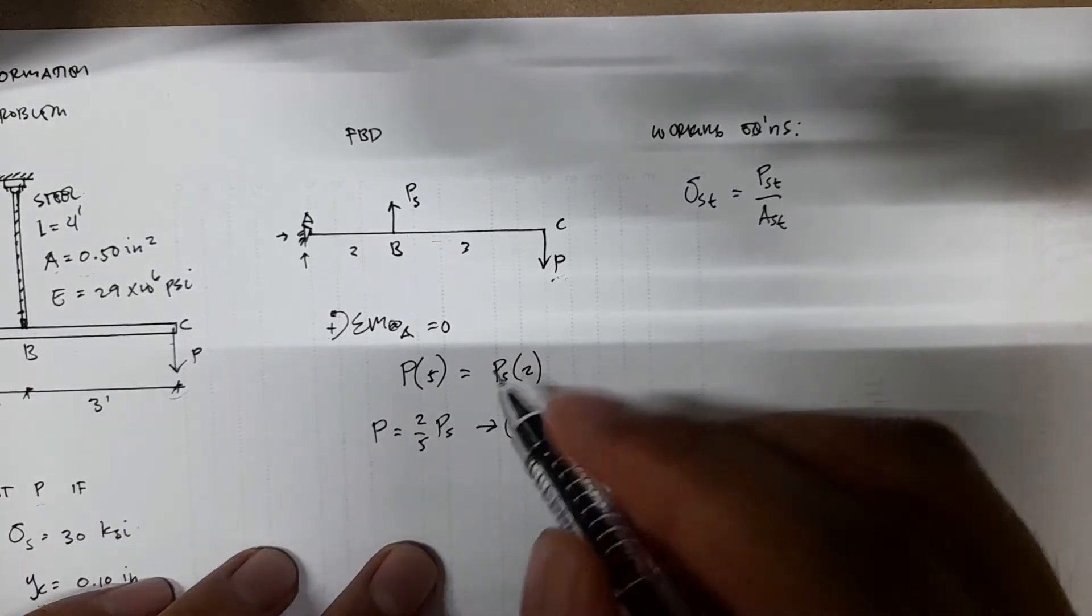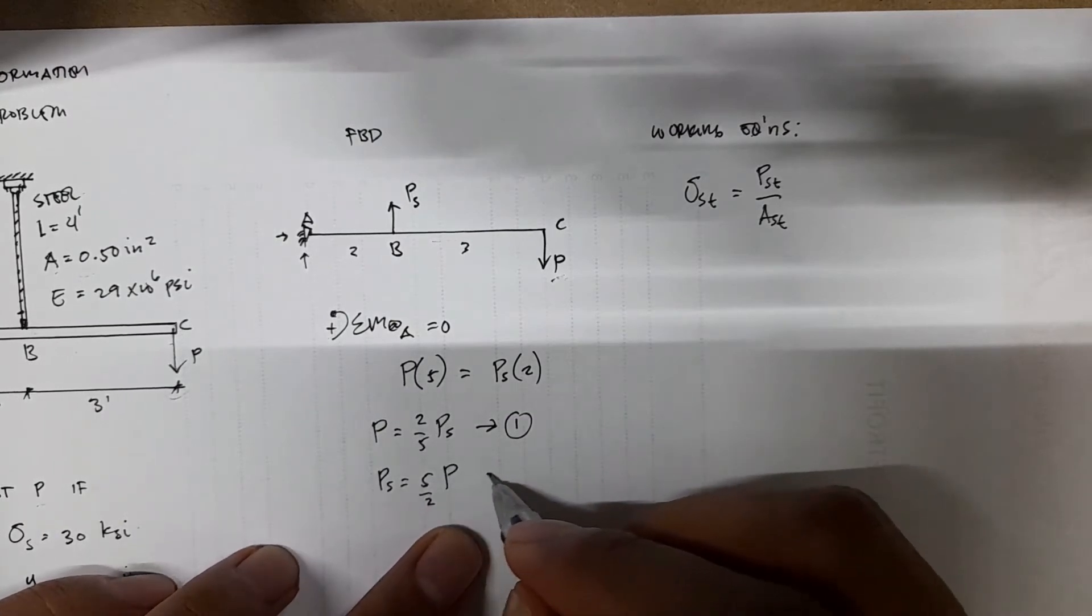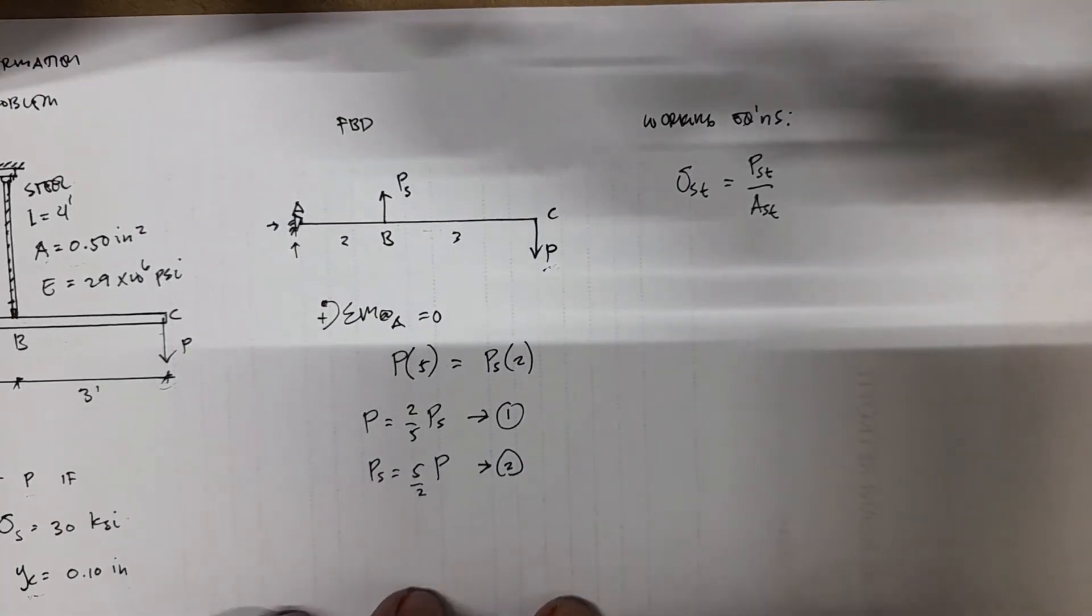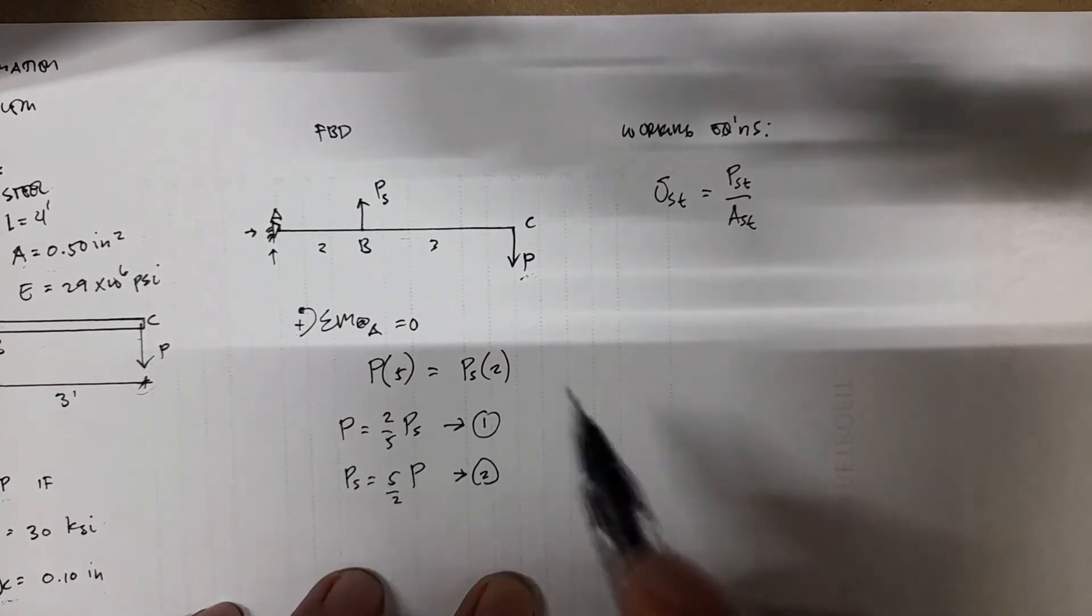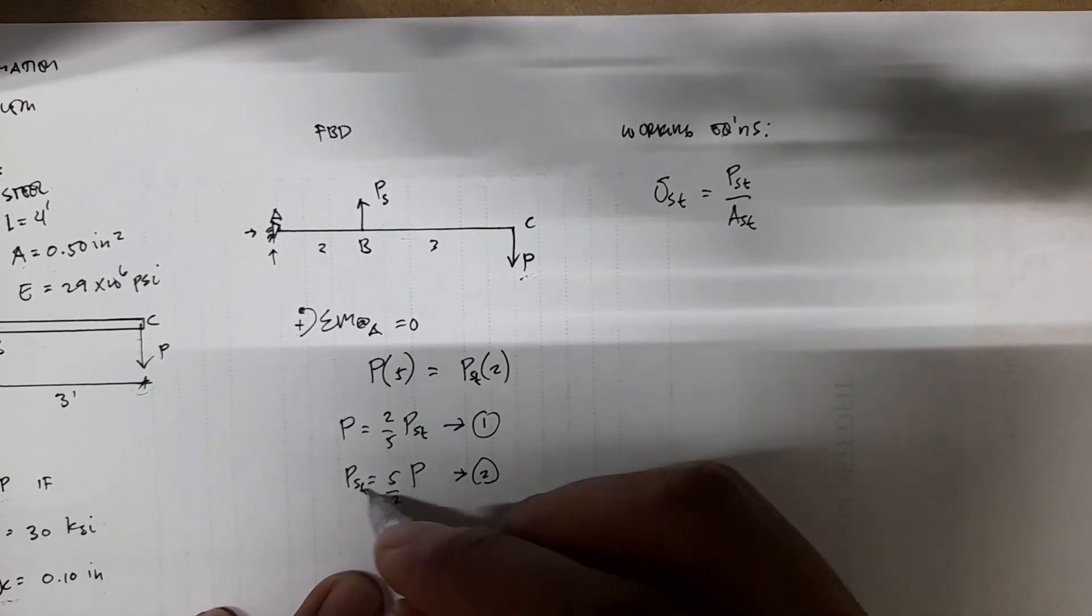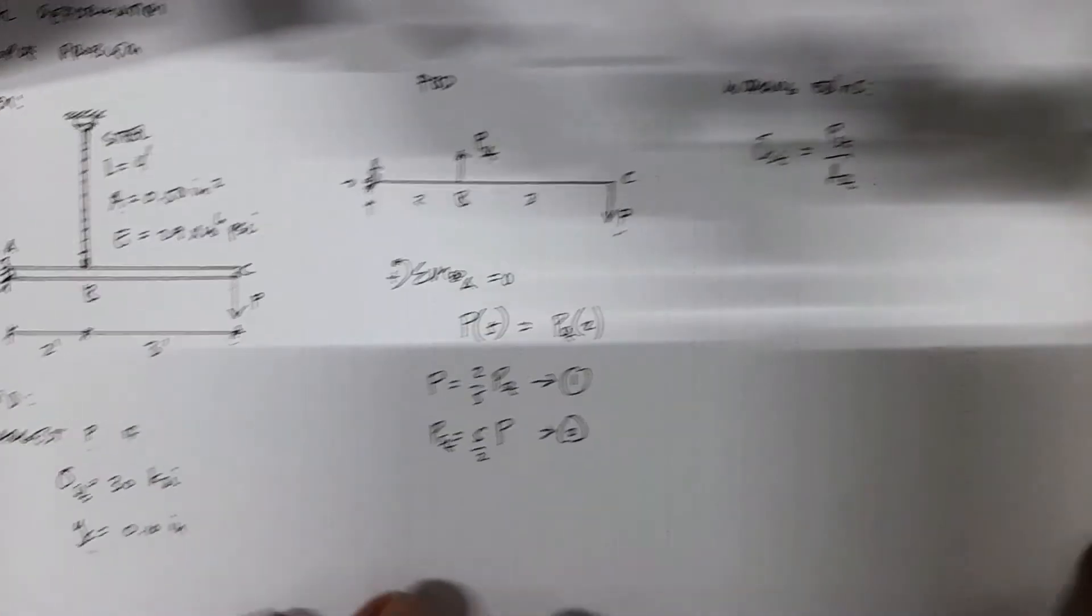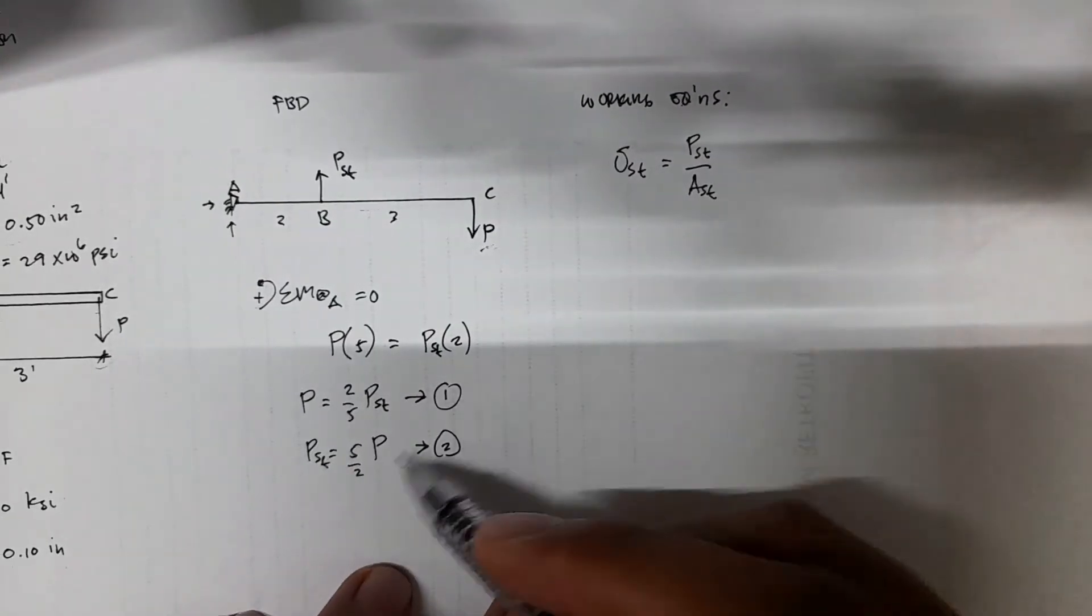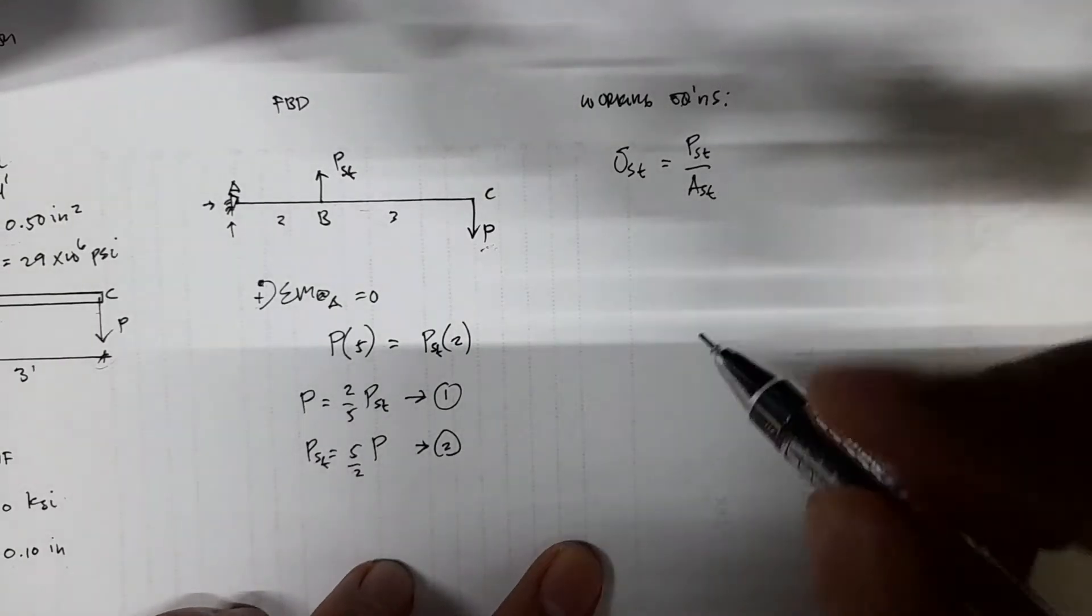This is equation 1. We can also have PST is 5 halves of P as equation 2. Now that we have the relationship between P and PST, we can solve for PST. We can also solve for P using this relationship, especially equation 2. Substitute equation 2 to the stress equation.